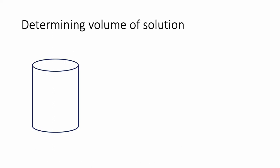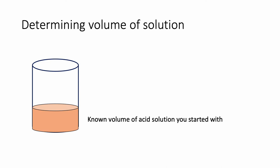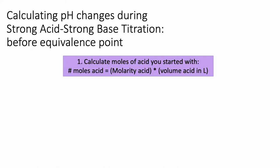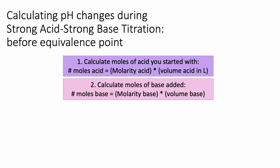For volume: you started by putting a known volume of acid solution in the flask, and then over time you've been adding base. You should know exactly how much base you've added, so you can add those together to get the total volume in your flask. When calculating pH changes, step one is to calculate moles of acid — that's molarity of acid times volume of acid in liters. Step two is to calculate moles of base — molarity times volume of base in liters. Don't forget to convert from milliliters to liters.